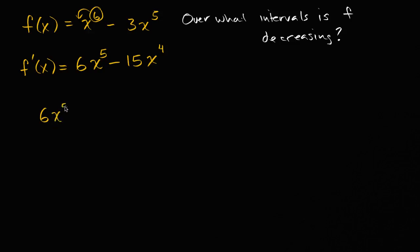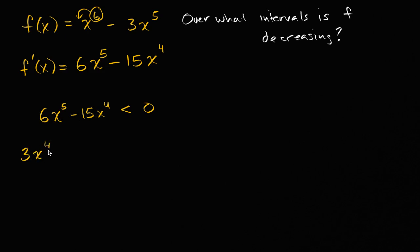So let's think about when this is going to be less than zero. Over what intervals is six x to the fifth minus 15 x to the fourth less than zero? We could factor out a three x to the fourth, and we'll be left with three x to the fourth times two x minus five, less than zero.